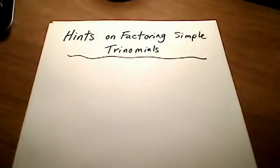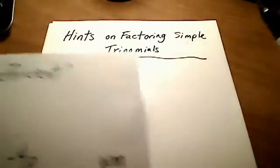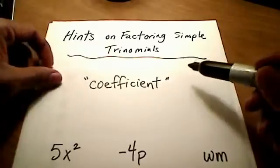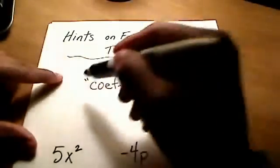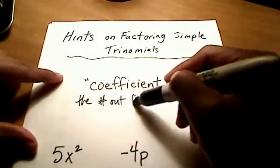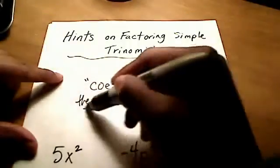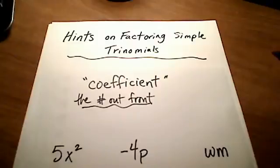I want to give you some hints on factoring simple trinomials. Before I begin, let me tell you what I mean by simple as opposed to those more difficult. Let's start with this fancy math word: coefficient. Coefficient is one of those really fancy math words that simply means the number out front. That's all it really means — don't be intimidated by it at all.